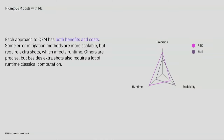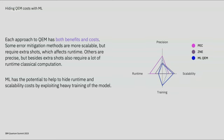Each approach to quantum error mitigation has its own benefits, but there is always a price you have to pay. Some error mitigation techniques are more scalable but require extra shots, which affects runtime. Others are more precise, but besides extra shots also require a lot of classical computation. Ideally, we want high precision and scalability while reducing runtime. We're exploring new error mitigation techniques with machine learning, which helps us hide the cost that comes with other approaches. It is possible because we are shifting all of the mitigation costs onto a heavy training phase, where most of the compute is happening. Training is heavy, but inference is fast with comparable precision and scalability.